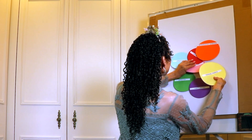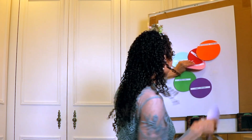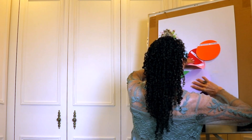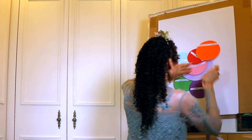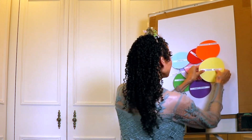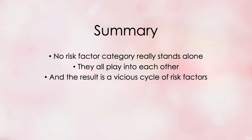I'm going to lift up all of these things and put this periwinkle circle underneath the whole lot of them. Voilà — now it's under all of them. The point of this video is that no risk factor category really stands alone. They all play into each other, and the result is a vicious cycle of risk factors. There's really no other summary for this tutorial than that, but I think we made a rather pretty set of circles with our construction paper.